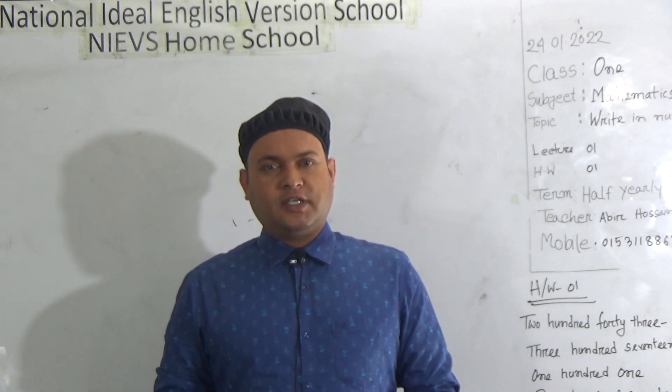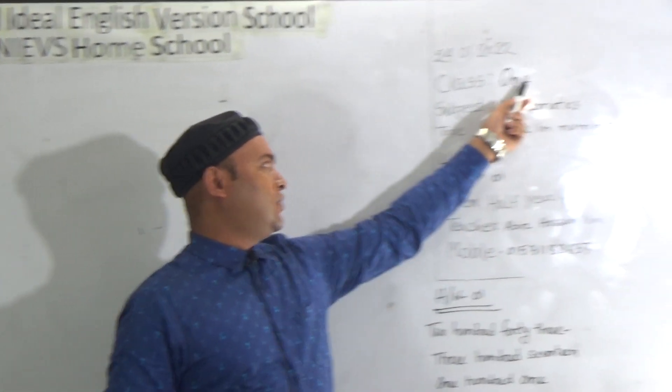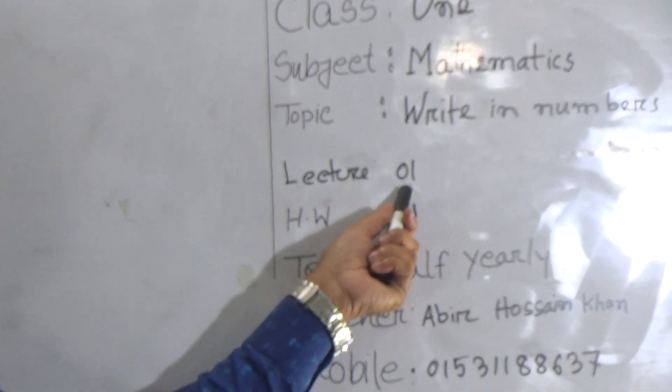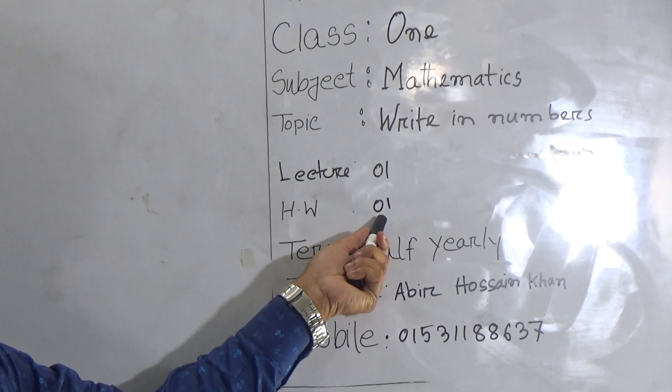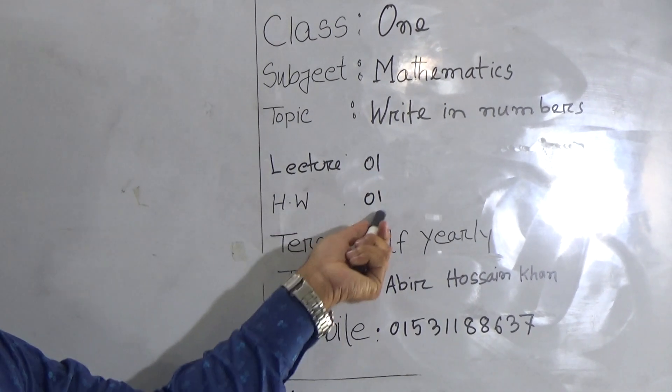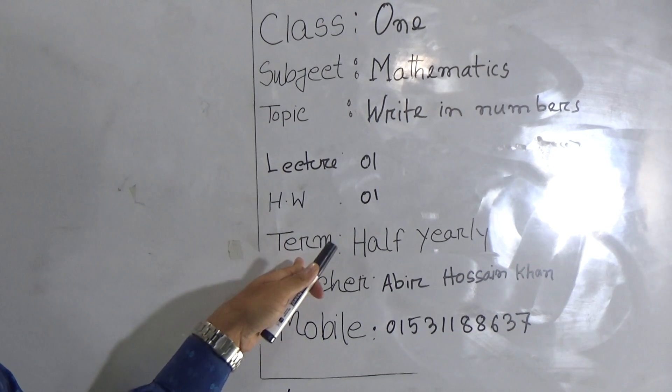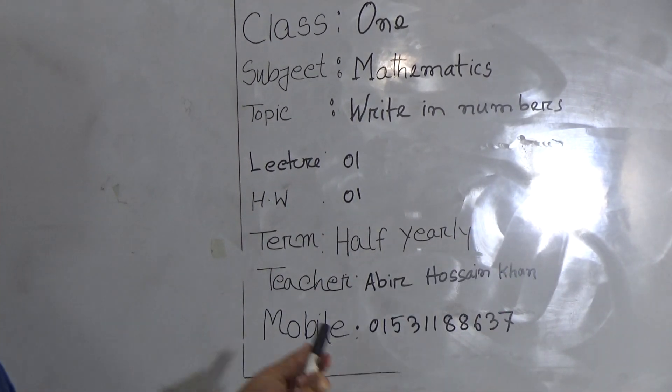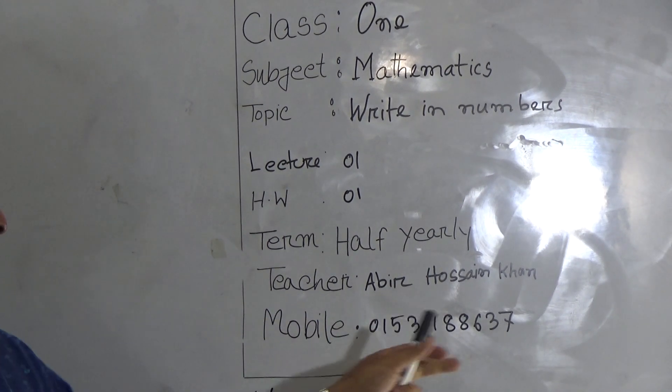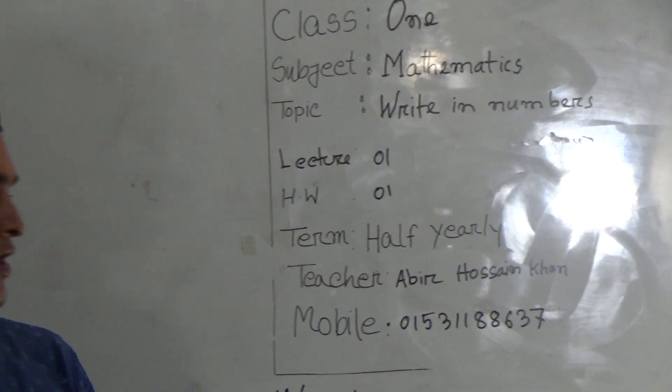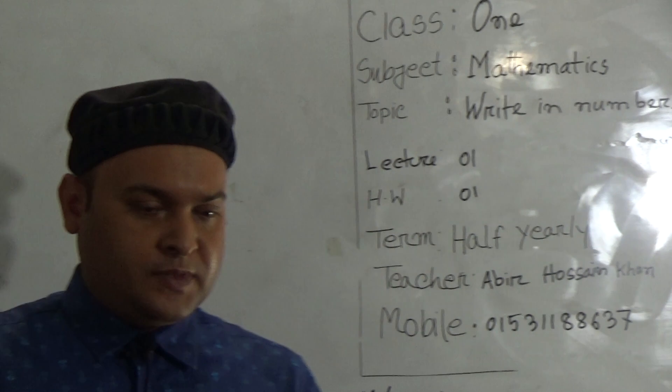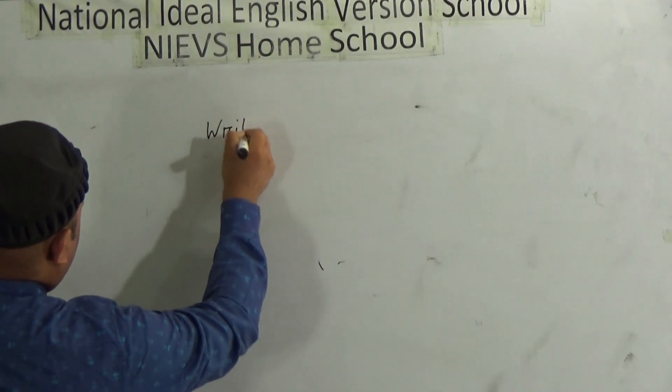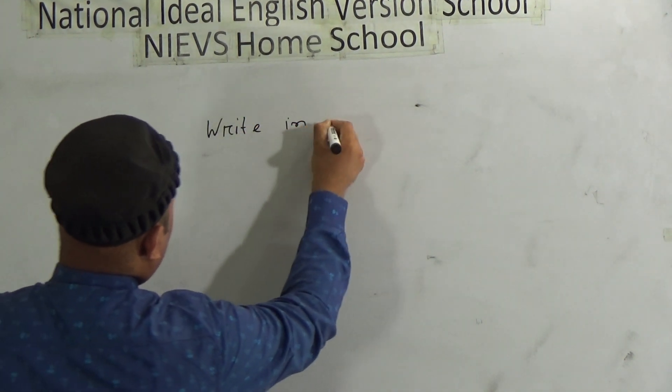Today I'm going to take mathematics class for Class 1 and our today's topic is writing numbers. This is lecture one and HW is one, that means today is the first class of this year and this class is including the half-yearly exam term. Here is my name and my contact number. If you need, then you will contact me. Now our today's topic is writing numbers.